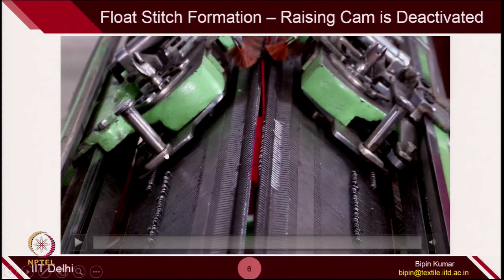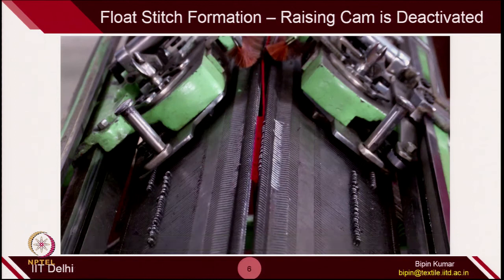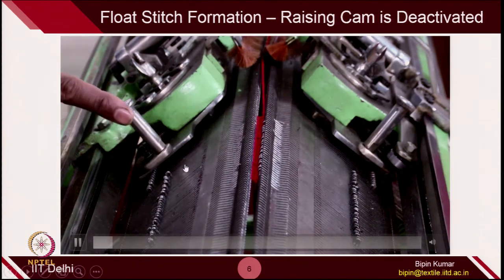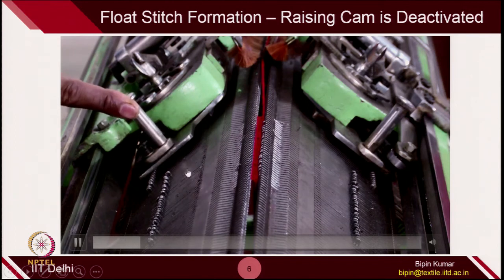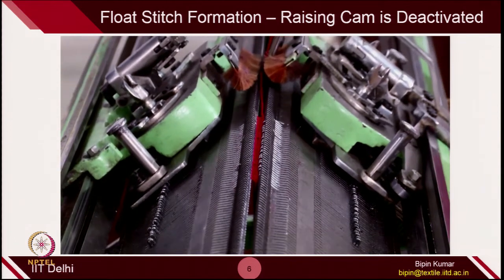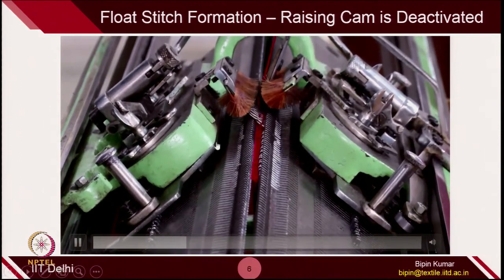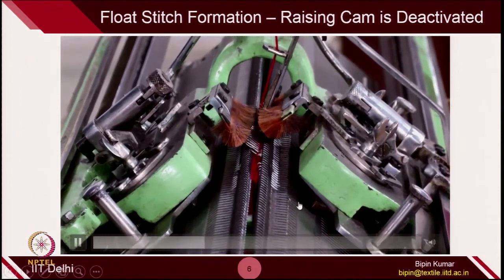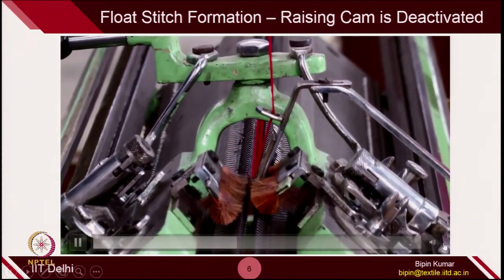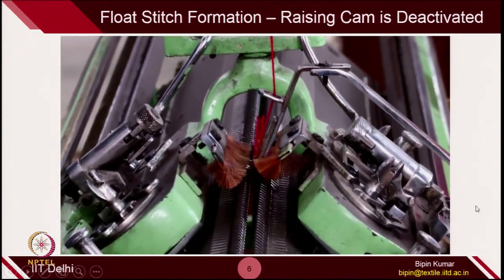You have 4 raising cam settings — 2 for each bed. These 2 are operational when you are moving the carrier from one side to the other. When you reverse the direction of the carrier, the opposite 2 raising cams will operate. In this video, I am pushing the bar inside, suppressing the raising cam. You can see no needles have been selected on this bed — only the needles on the opposite bed have been selected because the raising cam remains active there.